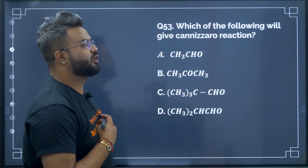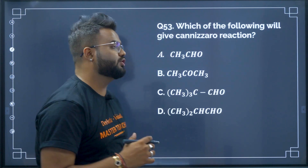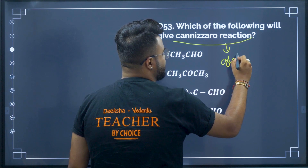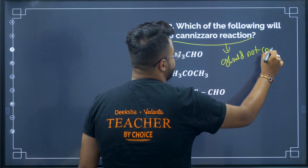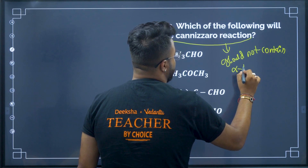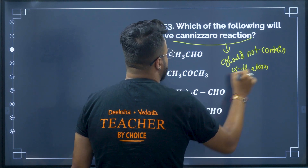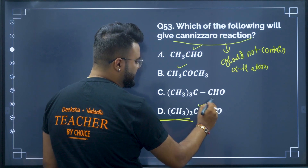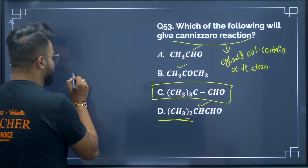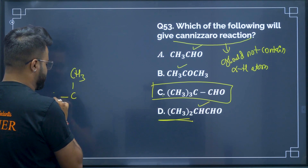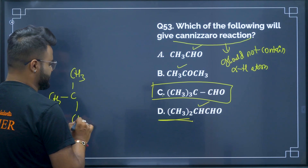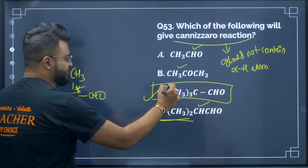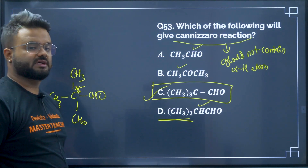Question number 53: which of the following will undergo Cannizzaro's reaction? For Cannizzaro's reaction, the compound must not contain an alpha hydrogen atom. Among the options, this one contains alpha hydrogen, this one contains alpha hydrogen, this one also contains alpha hydrogen. Only option C — (CH3)3CCHO — does not contain an alpha hydrogen atom. Therefore option C will undergo Cannizzaro's reaction.